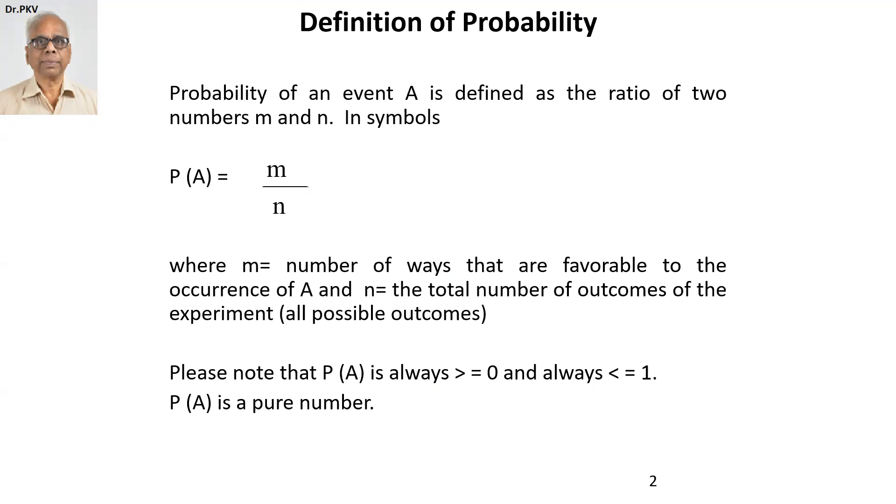Such a definition of probability requires it's a non-negative number. At the extreme case, it could be zero, but it is always greater than or equal to zero and always less than or equal to one. It's a pure number, a fraction that is lying between zero and one. So this is the definition of probability.